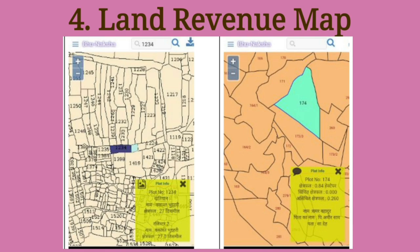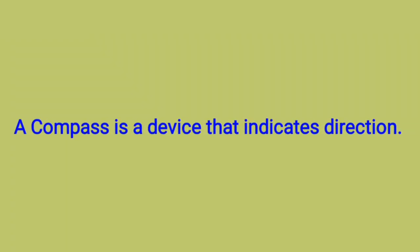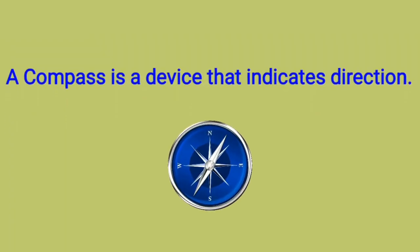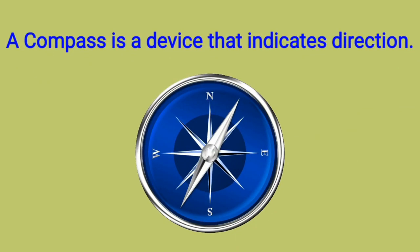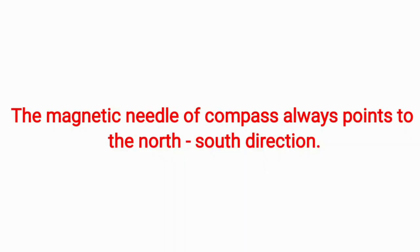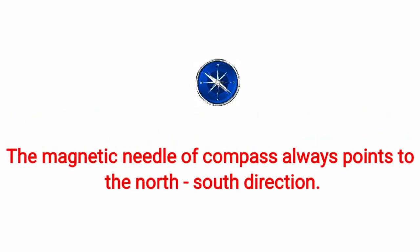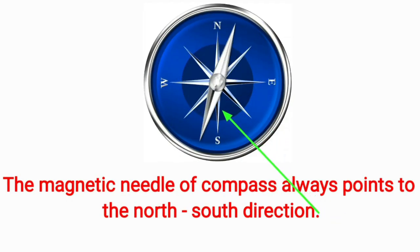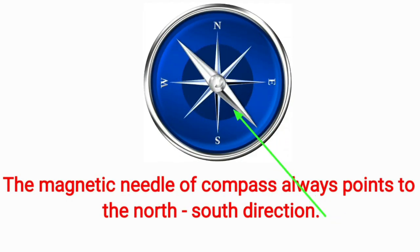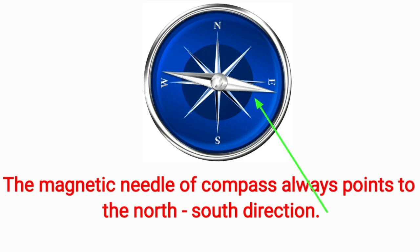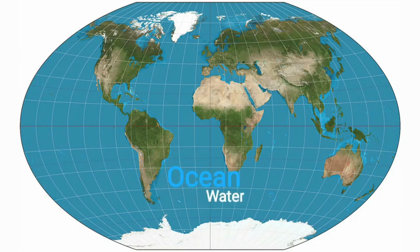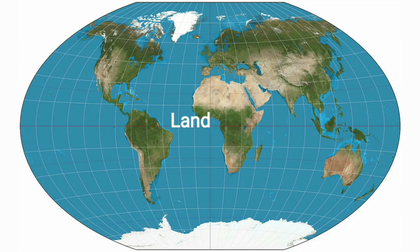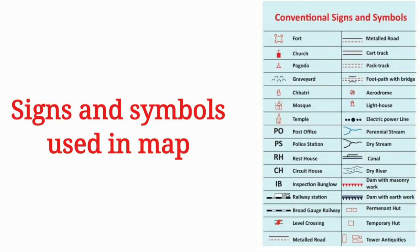We can find the direction with the help of a compass. The magnetic needle of a compass always points in the north-south direction. We cannot always show all different features of the earth on a map.